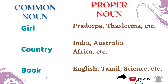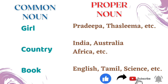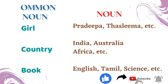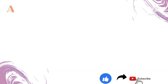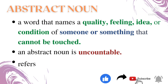Let's look at the difference between common noun and proper noun. The common noun 'girl' corresponds to proper nouns like Pradipa and Taslima. The common noun 'country' corresponds to proper nouns like India, Australia, and Africa. The common noun 'book' corresponds to proper nouns like languages and subjects — English, Tamil, and Science are proper nouns.